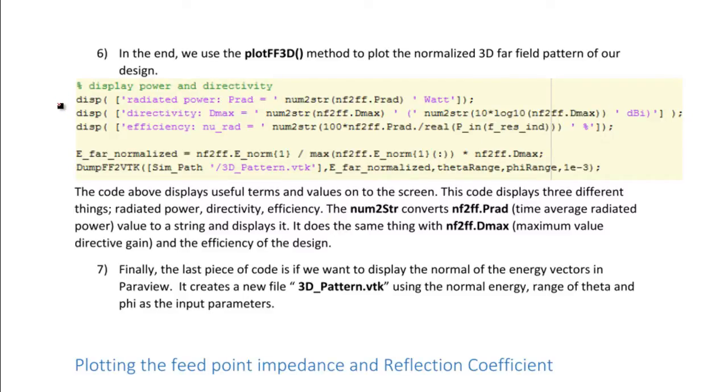The next part of the code just displays the power and directivity. So it displays the radiated power, the directivity, and the efficiency. It uses num2str to turn the number into string so it can be easily printed. And these two lines here are simply for if we want to simulate the result's impurity, which is not our problem.